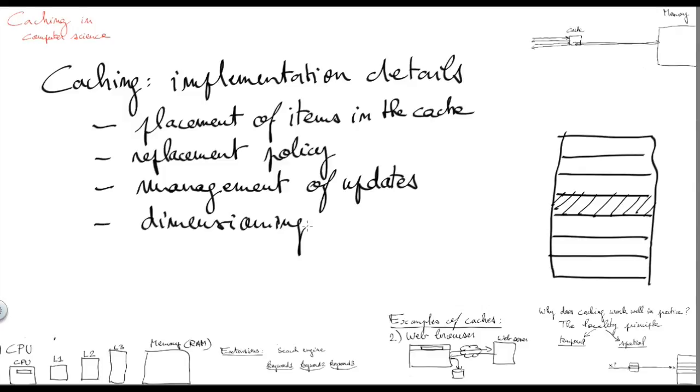Finally, an important question is how to properly dimension the capacity of the cache. We have to find a reasonable trade-off. If the cache is too small, it will not be efficient enough and we'll have lots of misses. And if the cache is too big, we'll have a waste of resources.